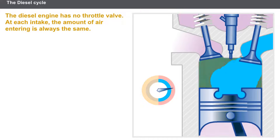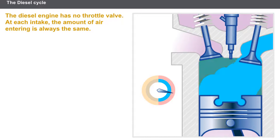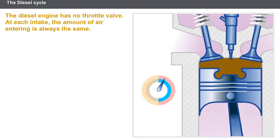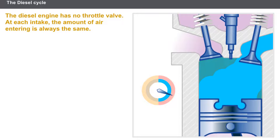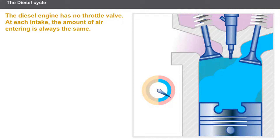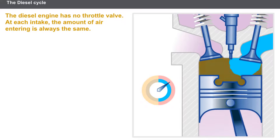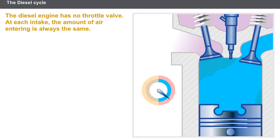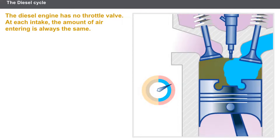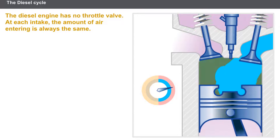During the induction phase, the inlet valve is open and the piston descends. Only the air is taken in during this phase. The diesel engine has no throttle valve; therefore, at each intake, the amount of air entering is always the same.